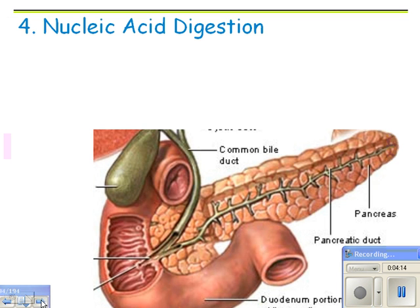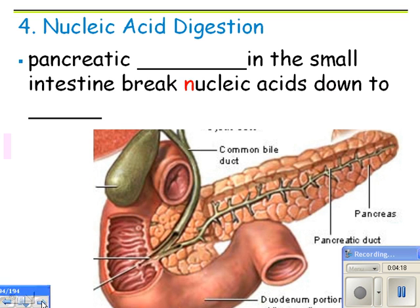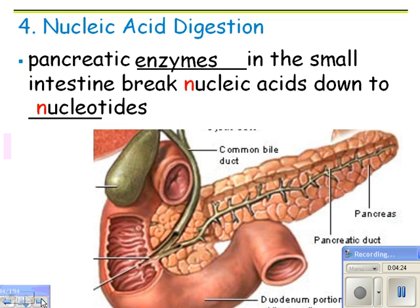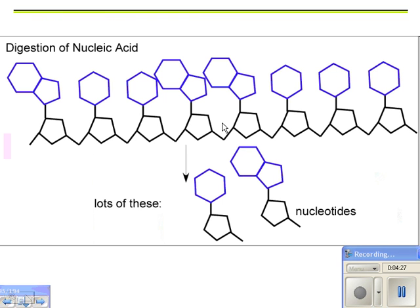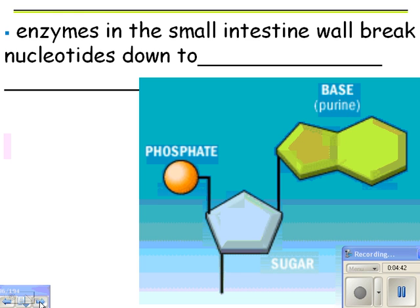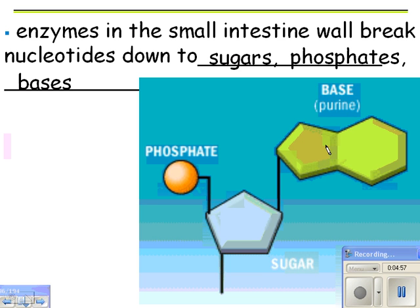Nucleic acid digestion happens entirely in the small intestine. Pancreatic enzymes in the small intestine break nucleic acids down into nucleotides. If you break the bonds in a nucleic acid, you get individual nucleotides — the monomers for nucleic acids. Another set of enzymes in the small intestine wall breaks a nucleotide down further into a sugar, a phosphate, and the nitrogenous base.